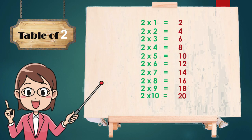Two ones are two, two twos are four, two threes are six, two fours are eight, two fives are ten, two sixes are twelve, two sevens are fourteen, two eights are sixteen, two nines are eighteen, two tens are twenty.